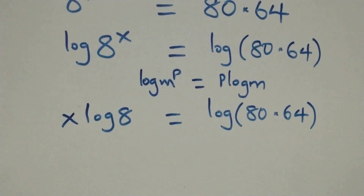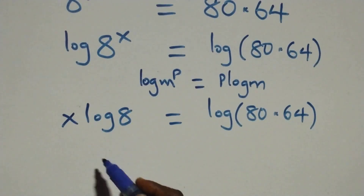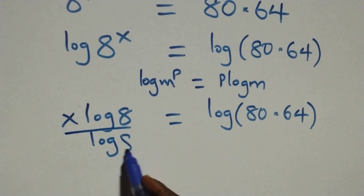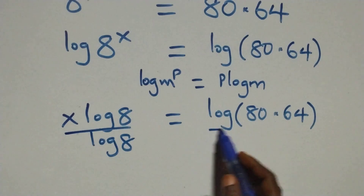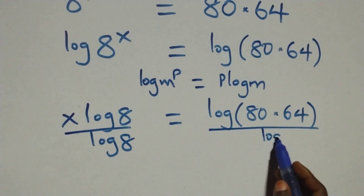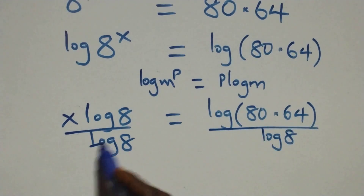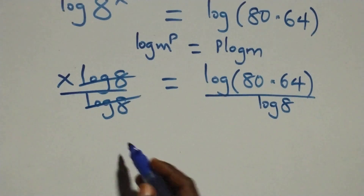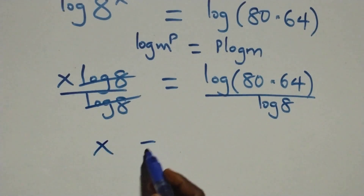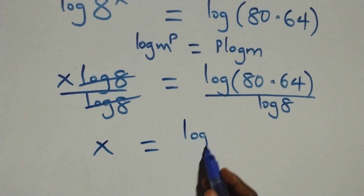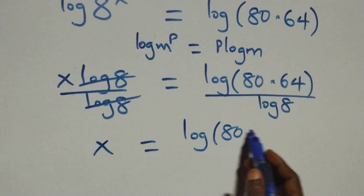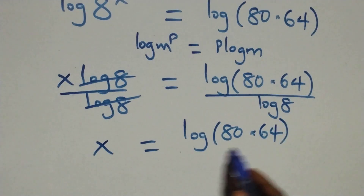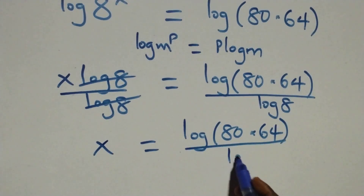Next step: we divide both sides by log 8. Log 8 cancels each other, and we have x equals log(80 times 64) over log 8.